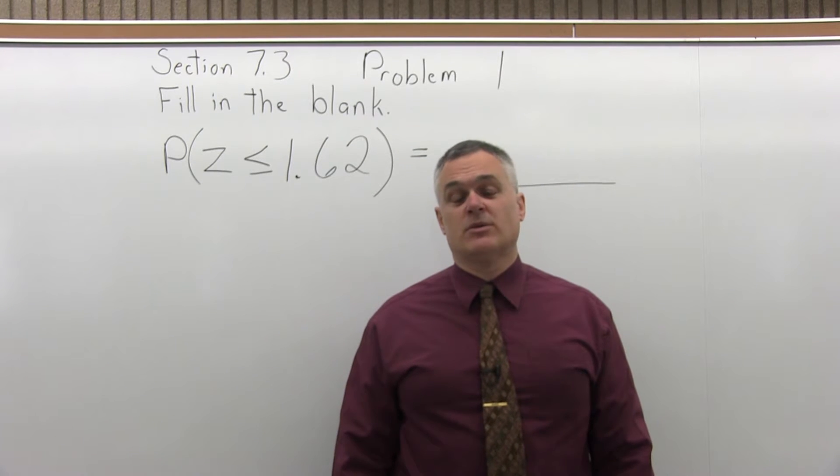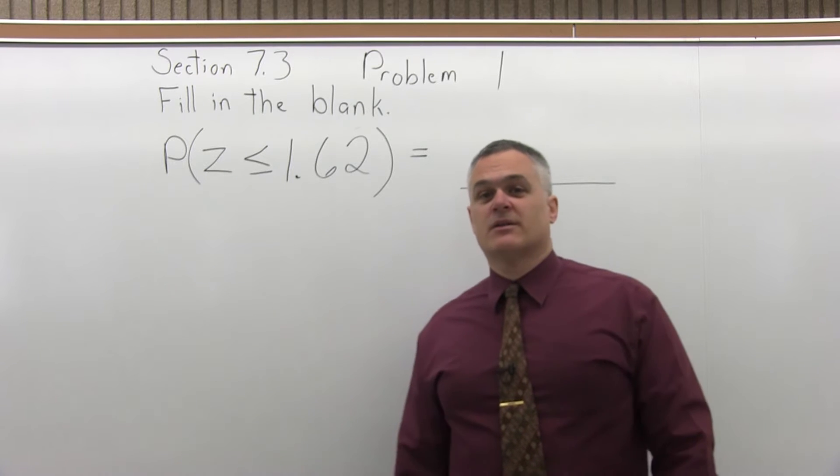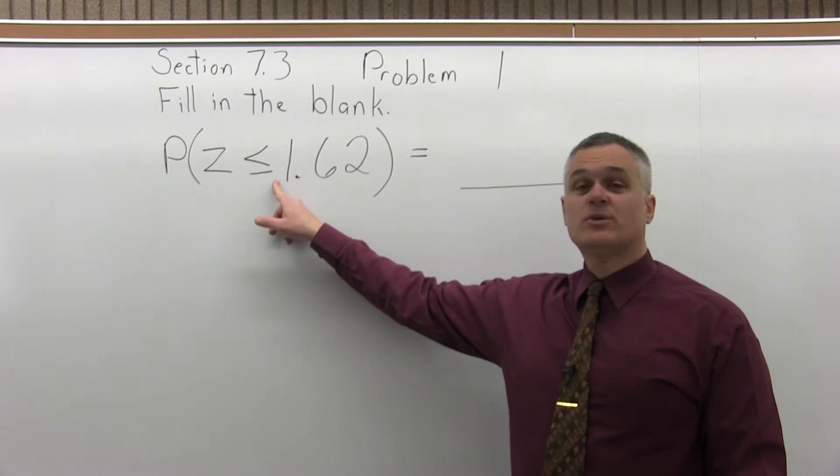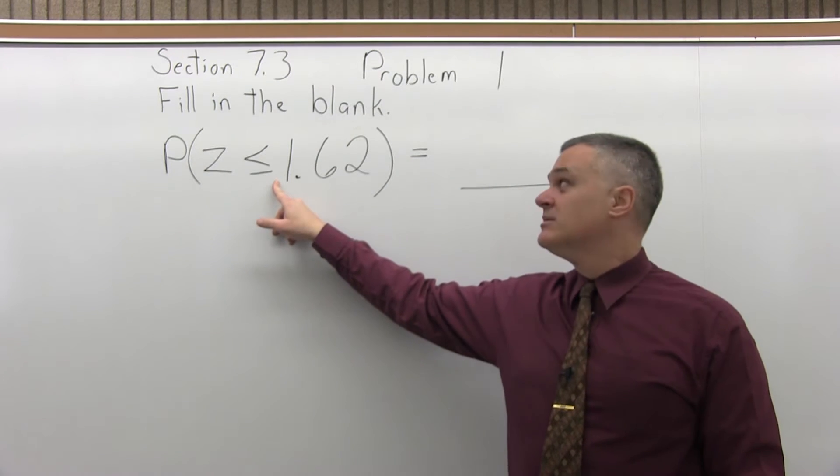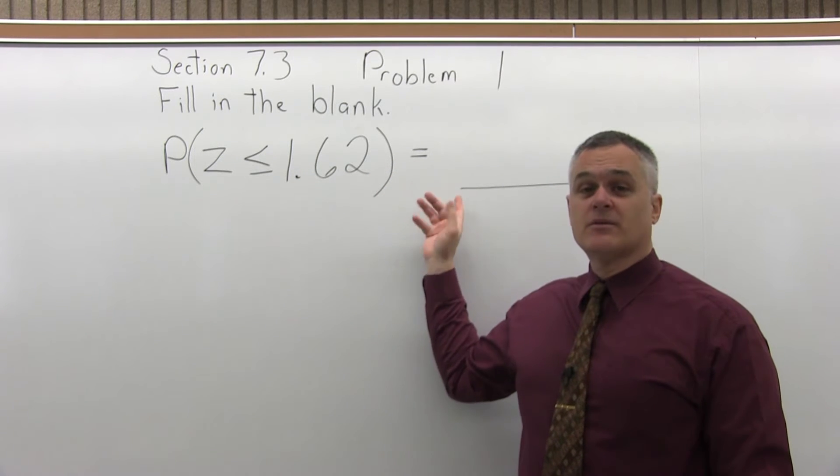This is Section 7.3, Problem 1. It says fill in the blank: the probability that Z is less than or equal to 1.62 equals blank. What's that answer?